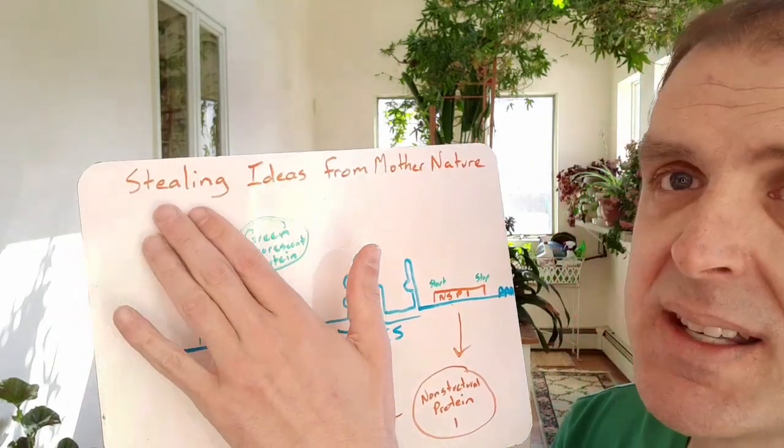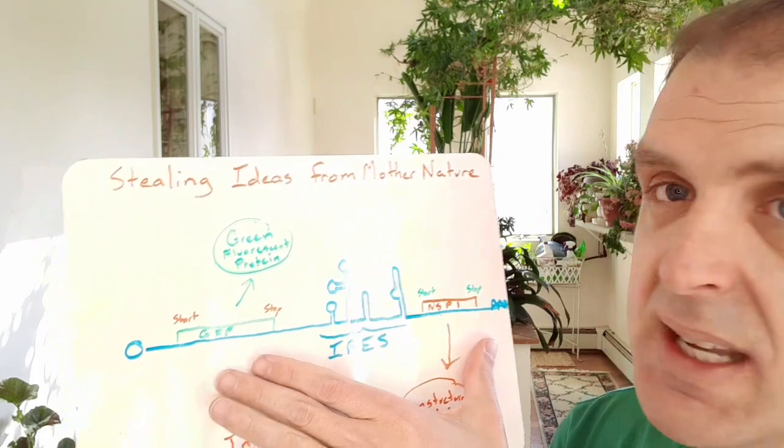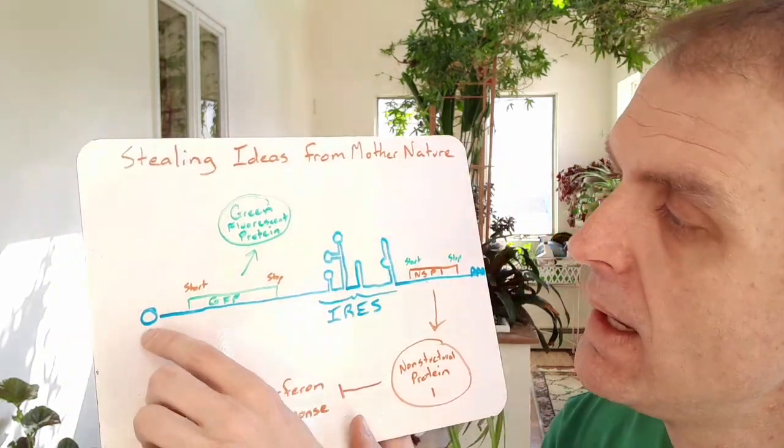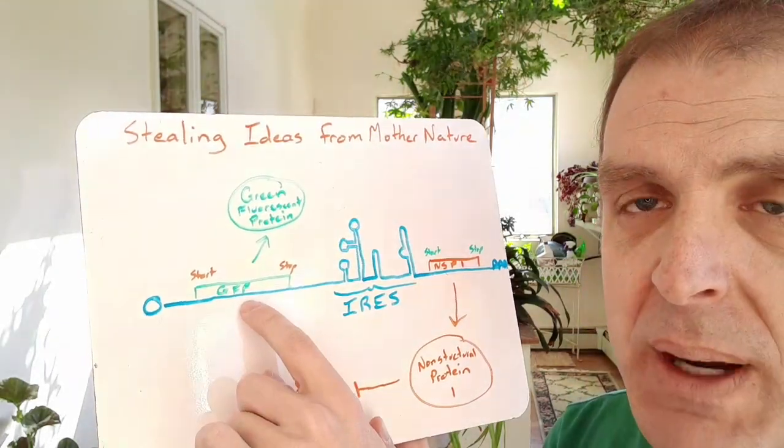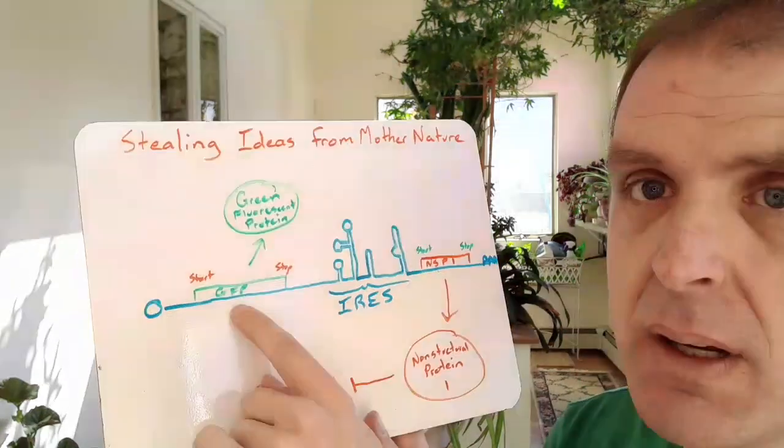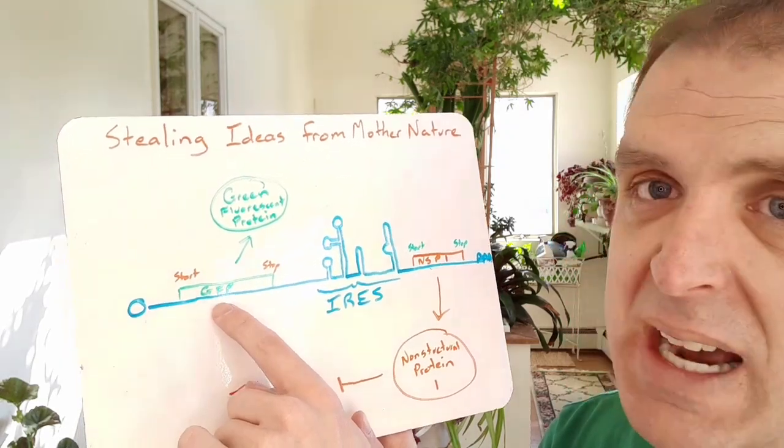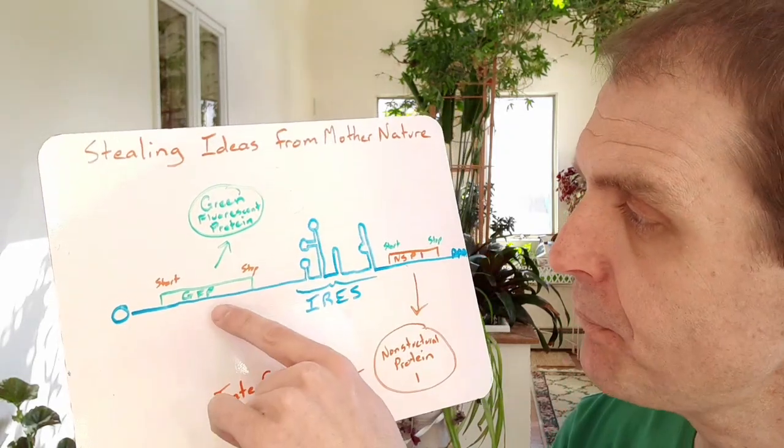So this slide is stealing ideas from Mother Nature. This is an example of an RNA that would be made in a cell that has a typical cap and then it has one open reading frame that expresses a fluorescent protein. In this case I have green fluorescent protein. I think if I remember back to my graduate school days it was actually a yellow fluorescent protein but you can put whatever color you want in.